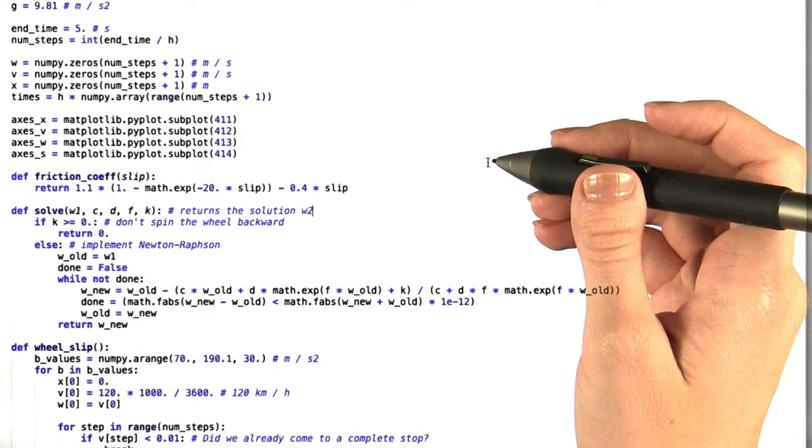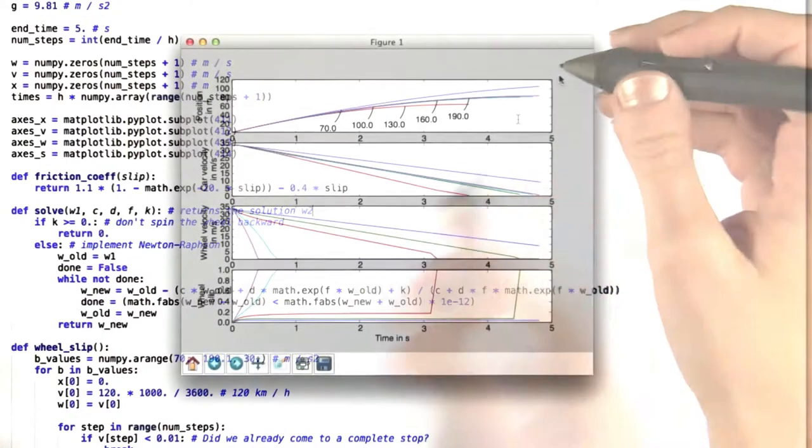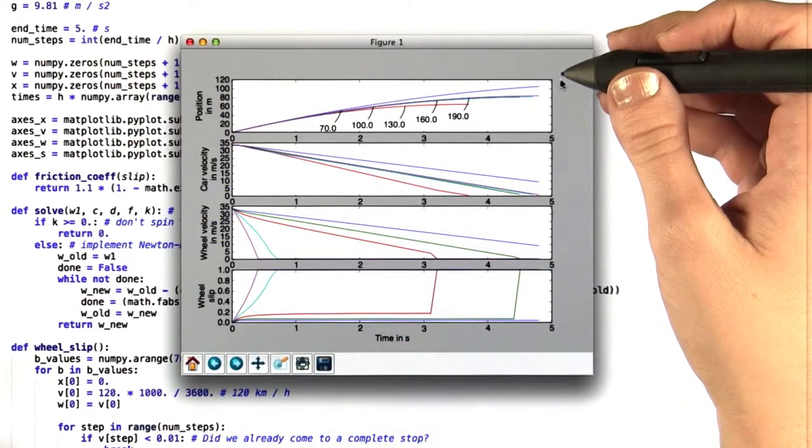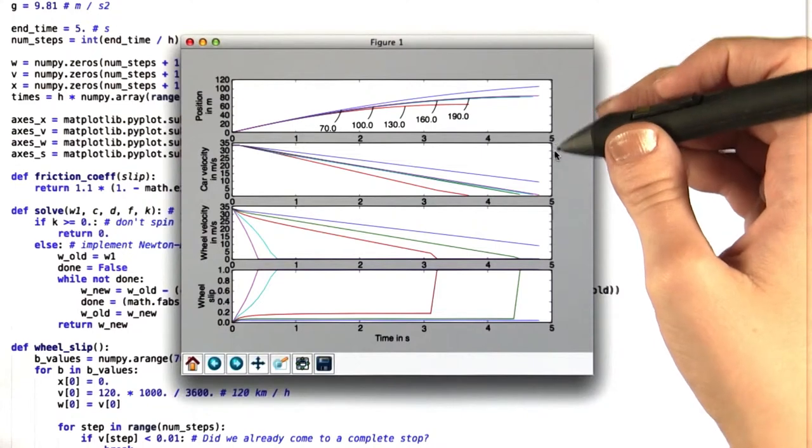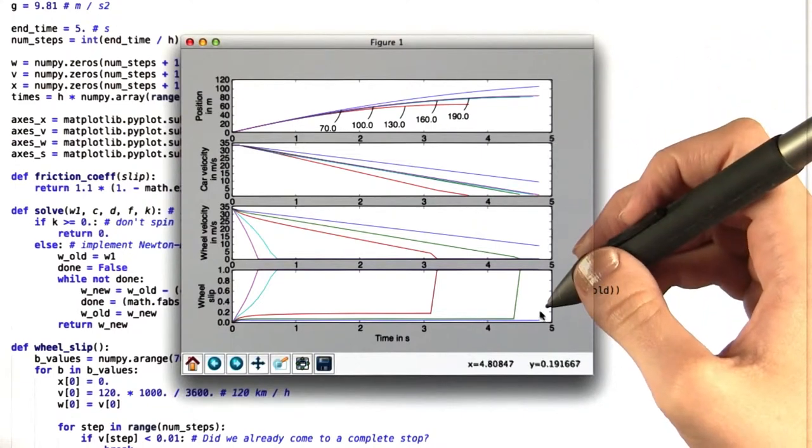Now that we understand how our solver is working, let's look at the plot we get. What we have here is a series of plots that all depend on time. First we have position, then car velocity, then wheel velocity, and then wheel slip.